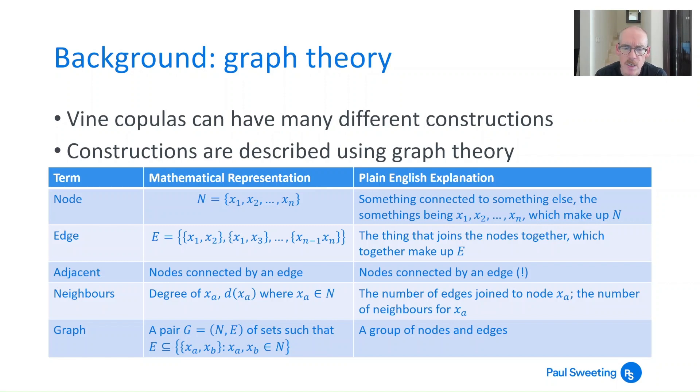If you've got nodes next to each other directly connected by an edge then they're said to be adjacent. And the number of edges which are joined to a particular node xa, that's the number of neighbors that xa has, which mathematically is the degree of xa or d(xa). And finally we've got something called a graph. A graph is defined by a pair of sets N and E, so the nodes and the edges. So a graph is really just any connection of nodes and edges.